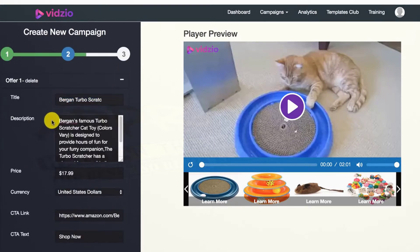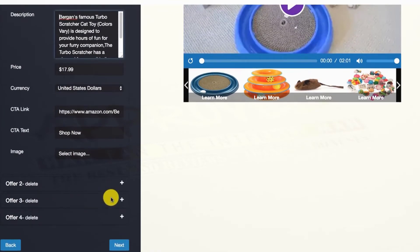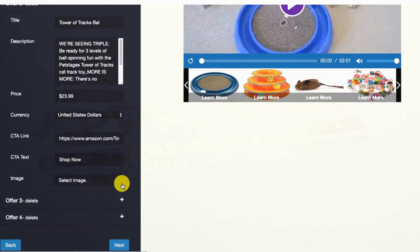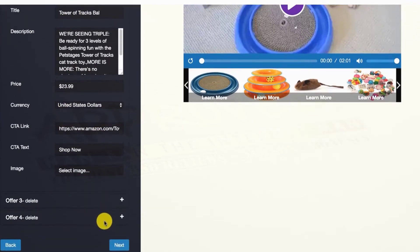Sit back and watch as the smart software instantly finds targeted products related to your video that you can choose from and promote. You can promote a single product or multiple products with each video, all with your affiliate link, so you get paid from every sale.